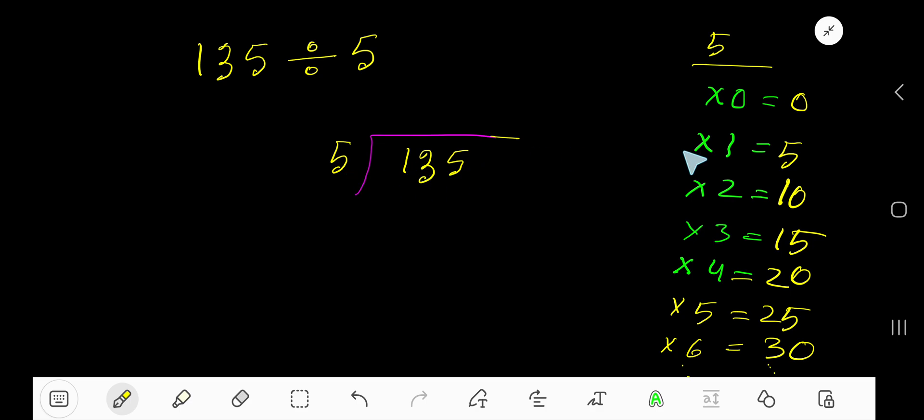5 goes into 1 how many times? Since 1 is less than 5, 0 times. 0 times 5 is 0. Subtract and you get 1.